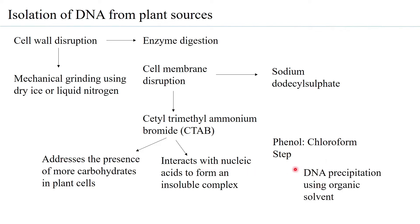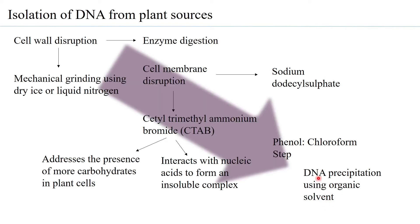After centrifugation, three phases are obtained. The aqueous layer is collected as it contains DNA and RNA. RNase can be added to remove RNA from the aqueous layer if desired. The aqueous layer is then subjected to organic solvent precipitation — most commonly chilled ethanol or isopropyl alcohol — to precipitate and concentrate the DNA.